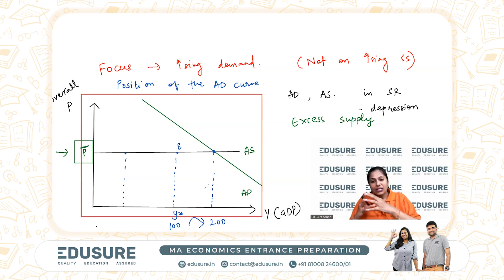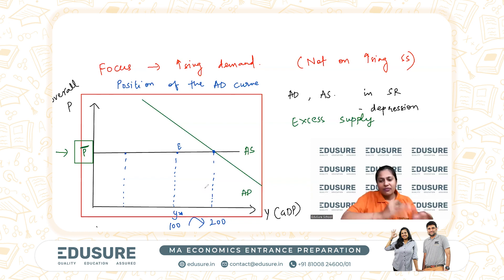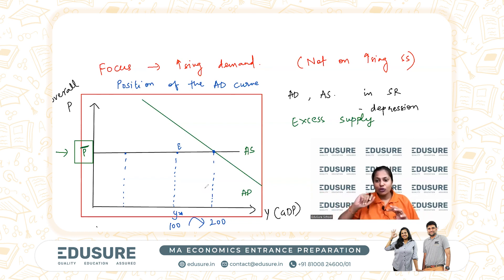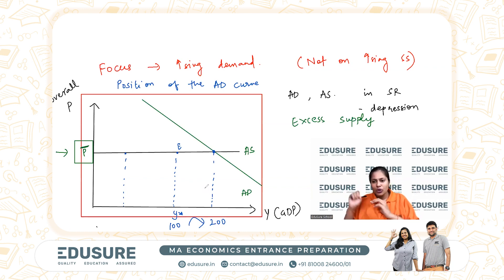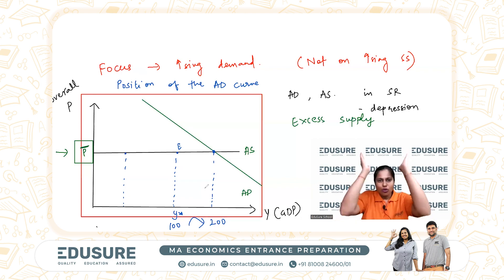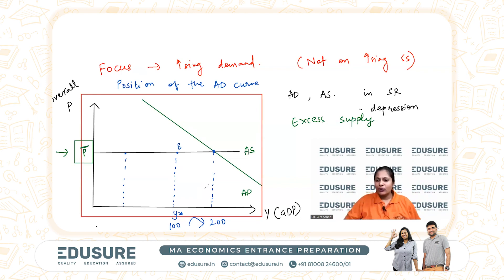Once we master demand, we move to supply, which is ADAS — the fourth topic. And finally, we'll do the long run, which is the growth model. That's how the whole picture comes together for macroeconomics.